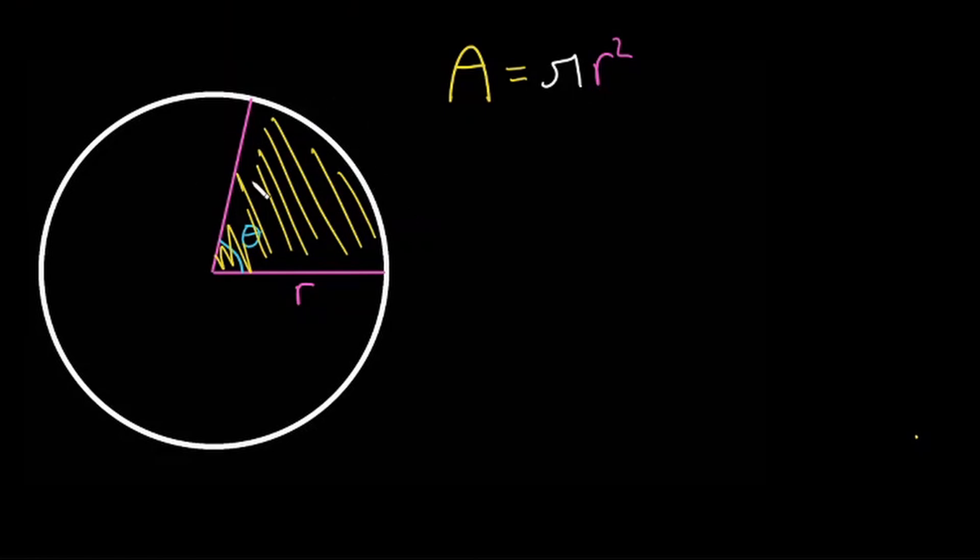But we only want the area of part of the circle. So how do we find the part that we want? Well, it's going to be a fraction. And we know a fraction is part over whole. So how would we find the fraction?